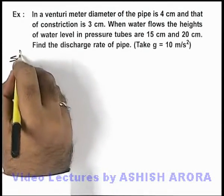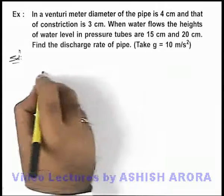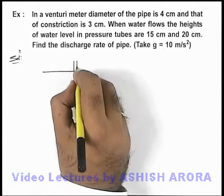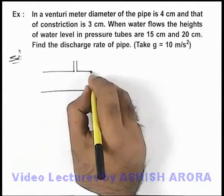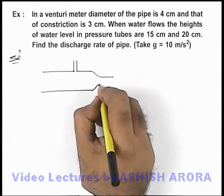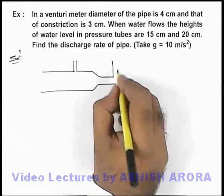We just draw the situation here. We can see in a venturi meter, there are 2 pressure tubes. One is attached to a pipe, and the other is connected to the constriction which is of smaller cross sectional area.